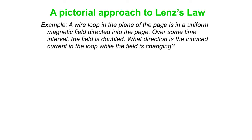Here's an example. A wire loop in the plane of the page is in a uniform magnetic field directed into the page. Over some time interval, the field is doubled, which will change the flux through the loop and give rise to an induced current. What we're trying to figure out is the direction of the induced current — is it clockwise or counterclockwise? We only get an induced current while we're changing the flux, so while the field is changing. Here are our steps; we'll go through them quickly, then do it in pictures.